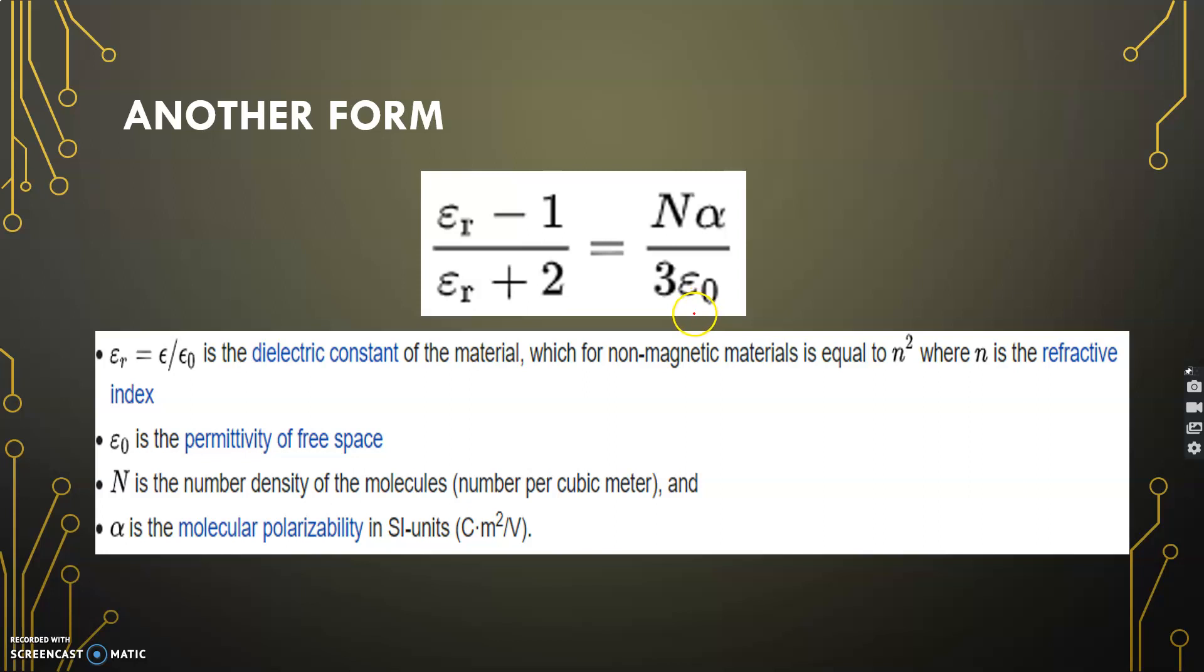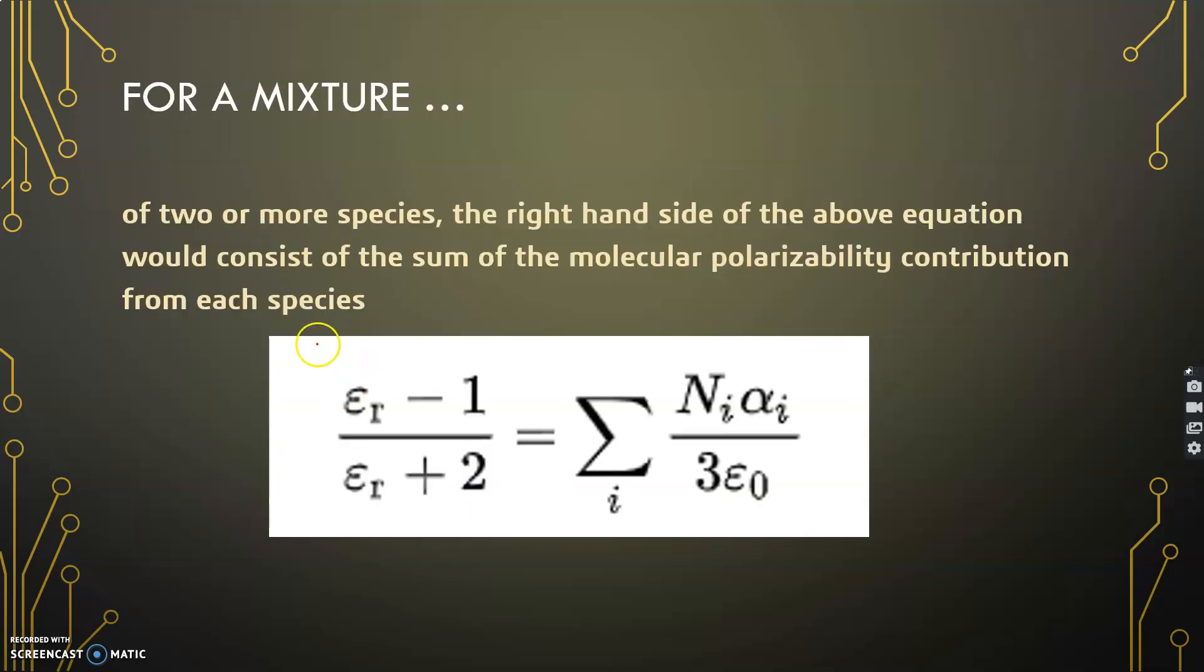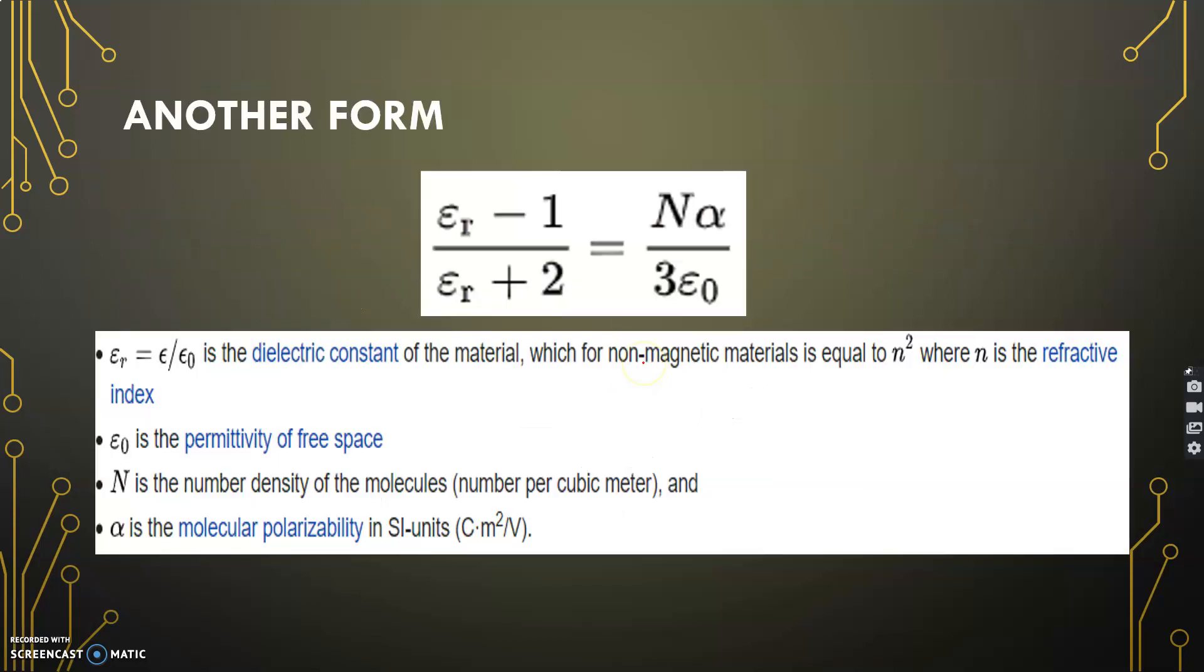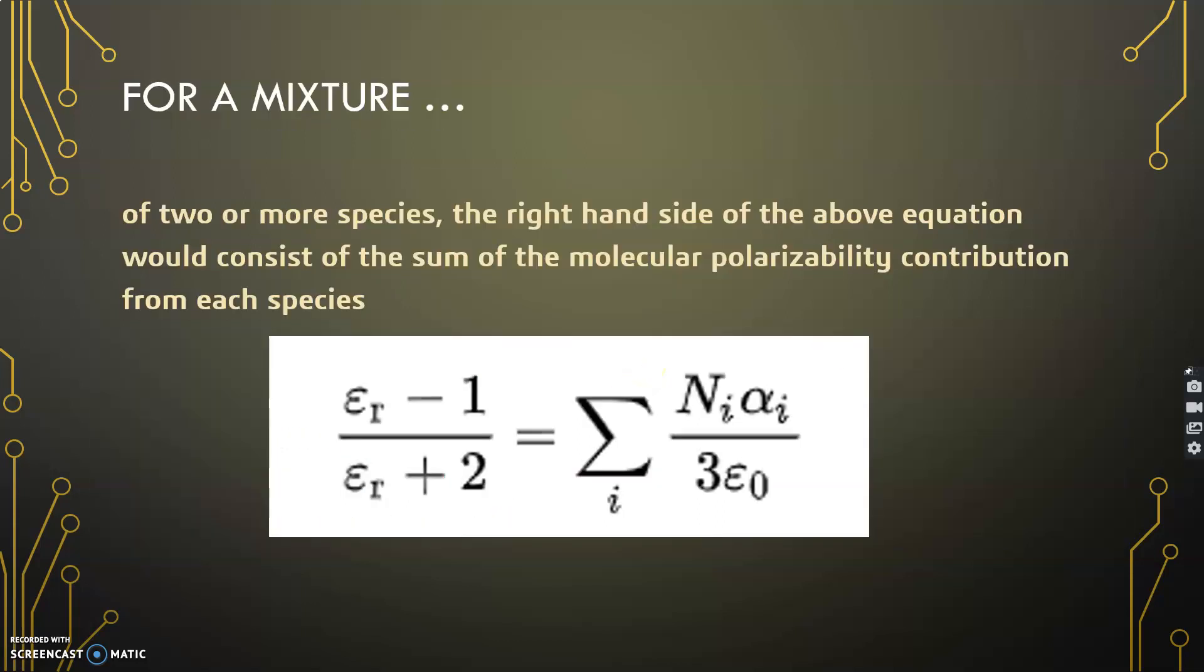The SI unit for alpha is C meter squared by V. For a mixture of two or more species, the right hand side of the above equation would consist of the sum of molecular polarizability contributions. It is the same equation as before, just we have to introduce this summation term to include all the polarizabilities.